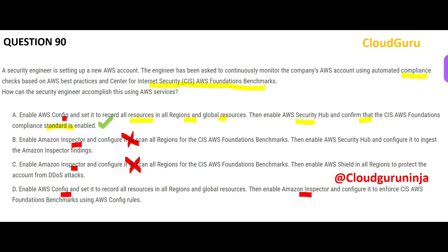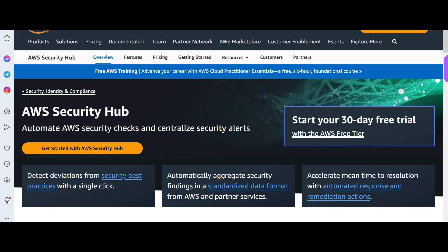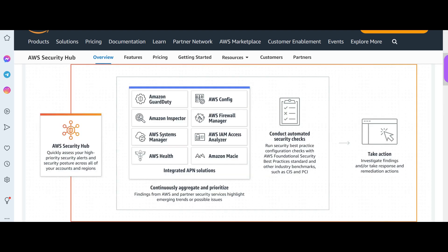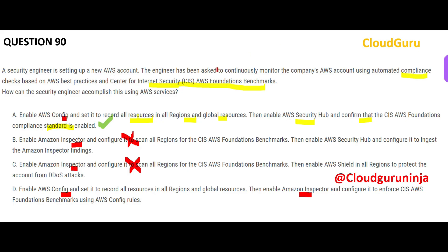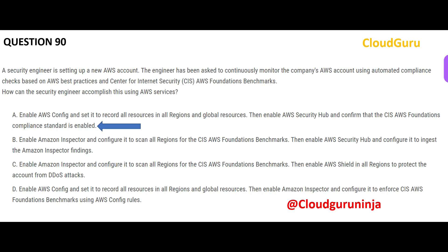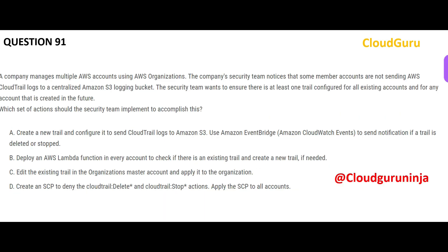Security Hub is about auditing and centralizing your security alerts. It works with GuardDuty, Config, Inspector, and other integrated solutions. It conducts automated security checks for all resources. However, looking at this option, it says we are recording for all resources, but the question requires recording across all accounts and all regions — that information is missing, so this option is wrong. Option A remains my final answer.